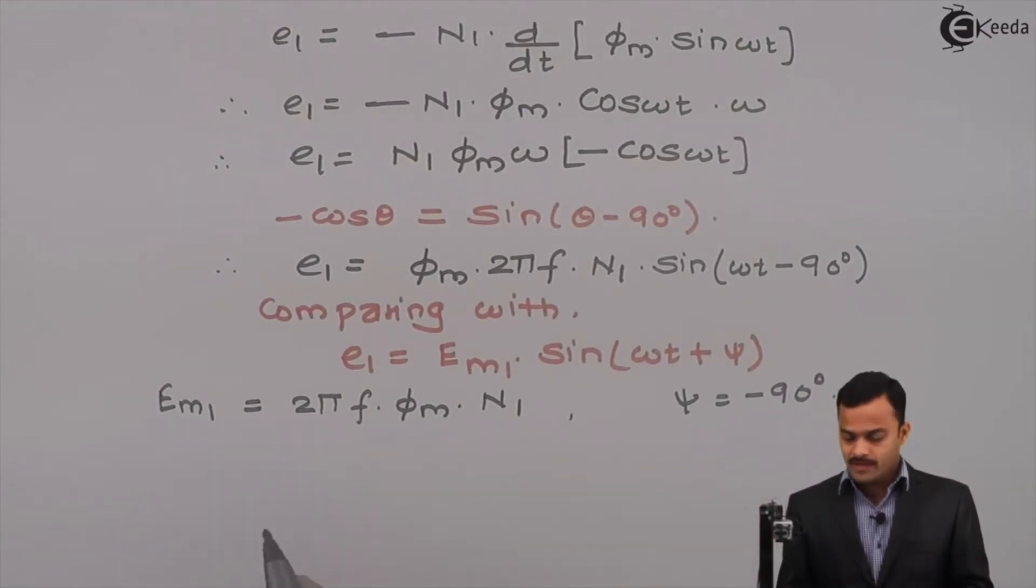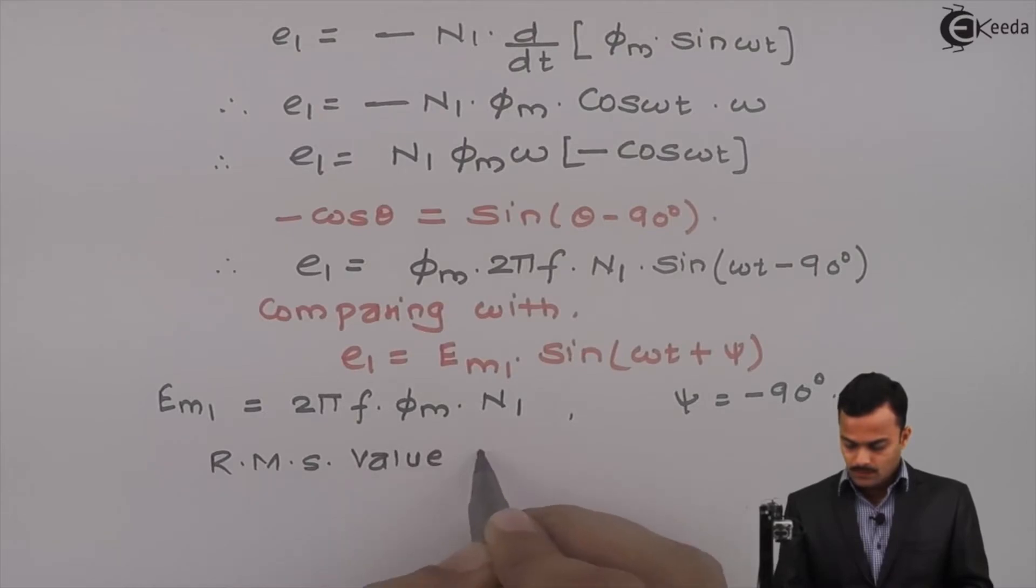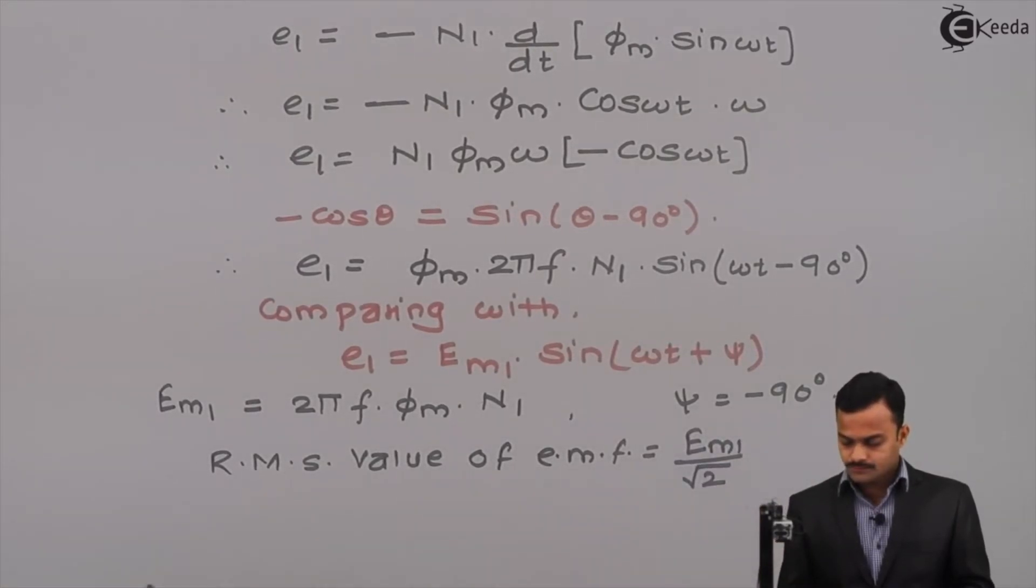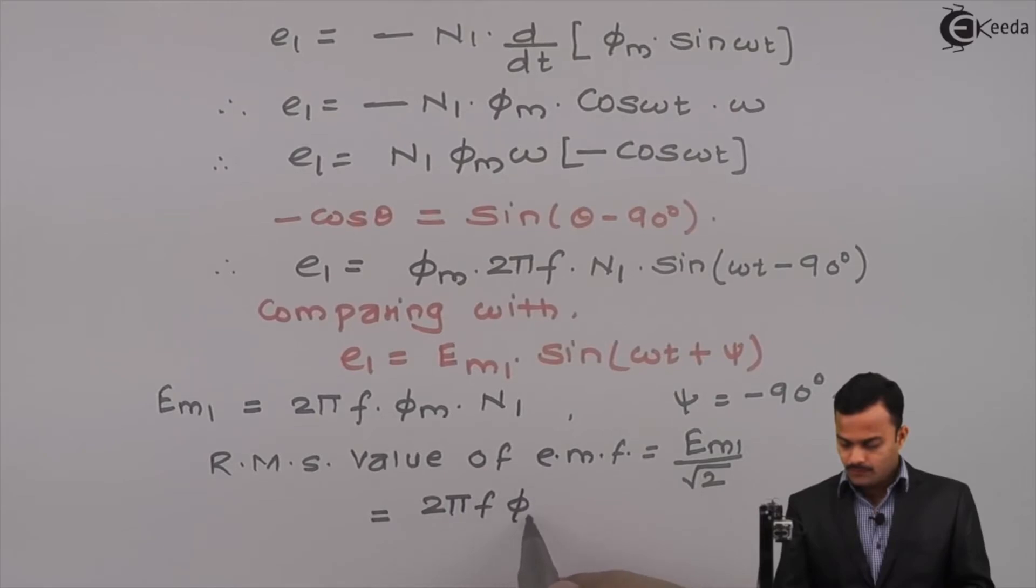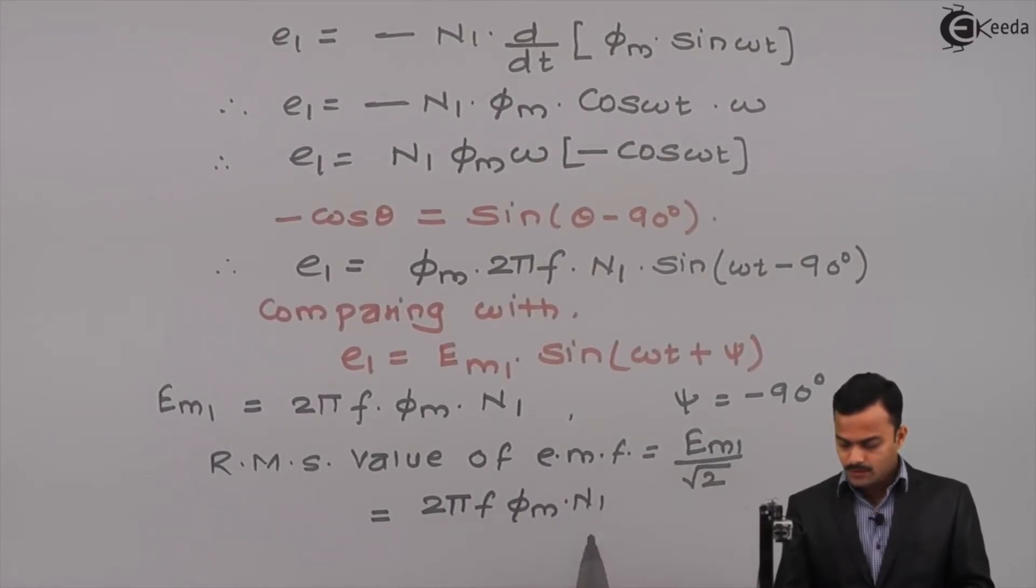We are dealing with RMS value. RMS value of E m1 equal to maximum value divided by root 2. This is equal to 2 pi f into phi m into n1 divided by root 2.